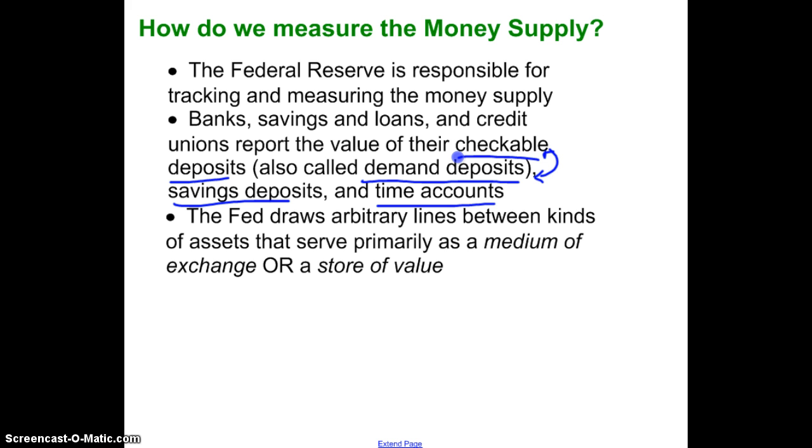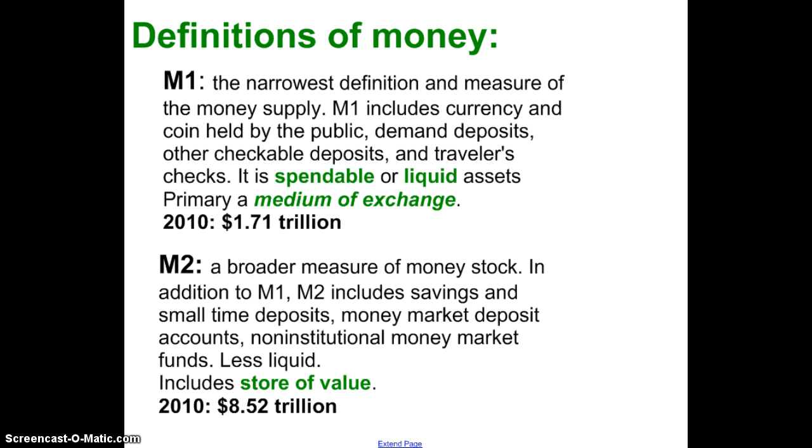The Fed then draws arbitrary lines between the kinds of assets, and a checking account, a savings account, a time account. Those would all be assets that serve primarily as a medium of exchange and the ones that serve primarily as a store of value. So these are the definitions of money. M1 is the narrowest definition of money and the narrowest definition of the money supply. Most of the time, when we refer to the money supply, like when we're talking about the money market, we are referring to M1. M1 includes primarily two things: currency and coin, which I'm going to put together, that's cash and change, and our demand deposits, our checking accounts. Those are the two big parts. That's like 95% of M1 right there, maybe 99%, is what's in checking accounts and what people have in cash and in coins.